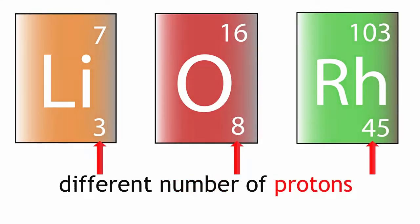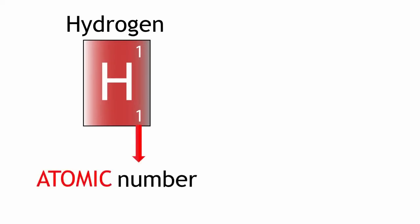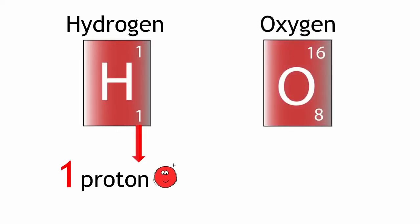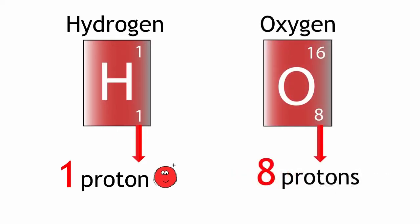For example, an atom of hydrogen has an atomic number of one, because it has one proton. But an atom of oxygen has an atomic number of eight, because it has eight protons.